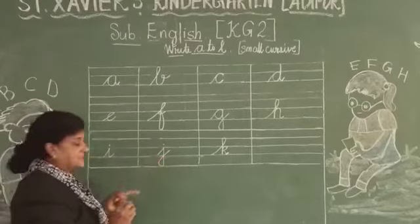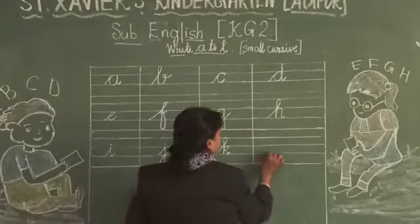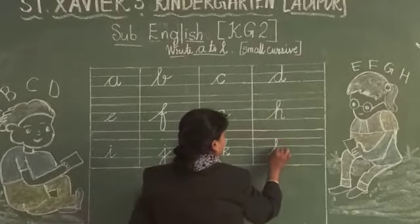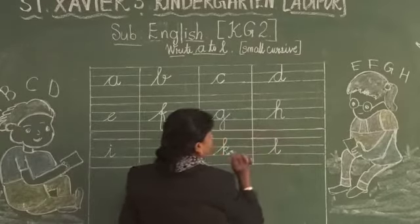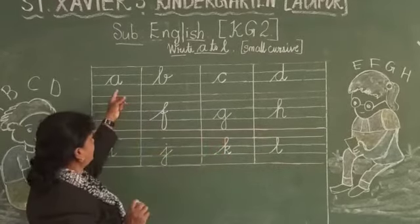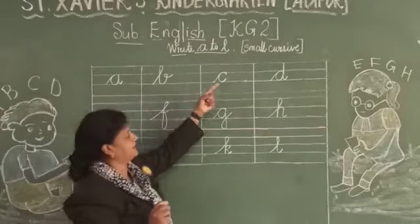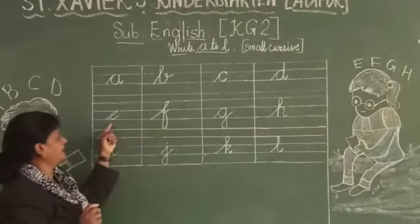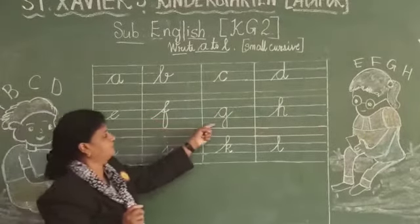K is for Kite. After K, you will write L. L is for Lotus. This is your A to L. A, B, C, D, E, F, G,